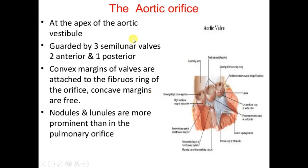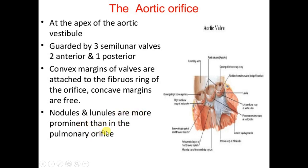The aortic valve is located at the apex of the aortic vestibule, which developed from the bulbous cordis portion of the heart tube and is smooth. It has three semilunar cusps — two anterior and one posterior. The convex margins of the valves are attached to the fibrous sling of the orifice and the concave margins are free. The nodules and lunules are more prominent than in the pulmonary valve.